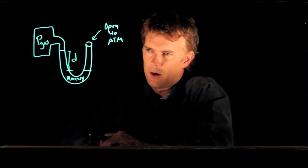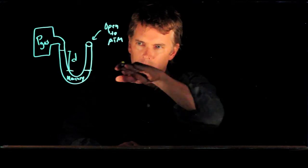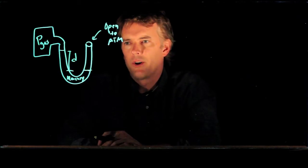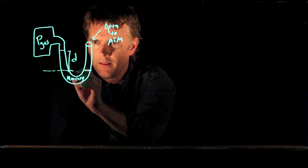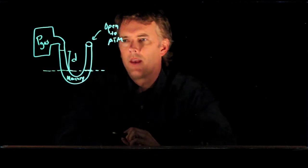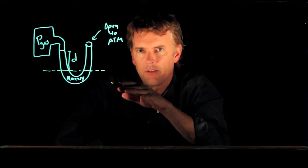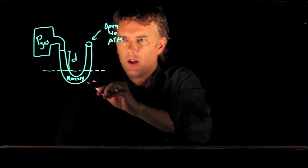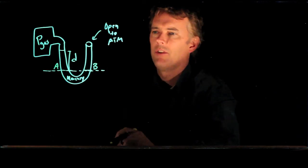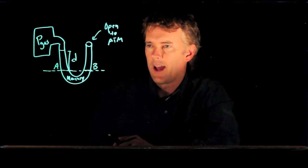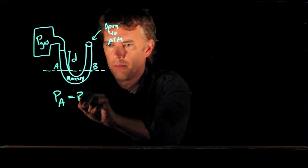Alright, so how do we do that? One thing we realize is if we look horizontally, the pressures have to be the same. So if we draw a dashed line straight across there, the pressure on the left side tube has to be the same as the pressure on the right side tube. So if we call this left side position A and the right side position B, those pressures have to be equal. P sub A equals P sub B.